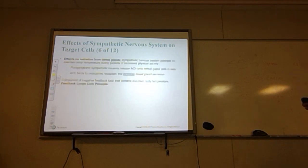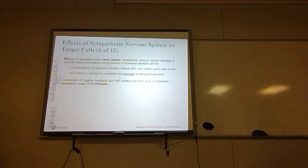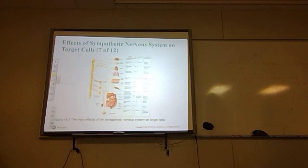The sympathetic nervous system attempts to maintain body temperature during periods of increased physical activity by affecting sweat gland secretions. The post-ganglionic sympathetic neurons release acetylcholine onto sweat gland cells in the skin, and that acetylcholine binds to muscarinic receptors, increasing sweat gland secretion. These all play a role in and follow the feedback loop core principle.